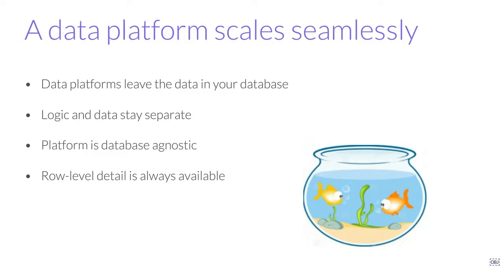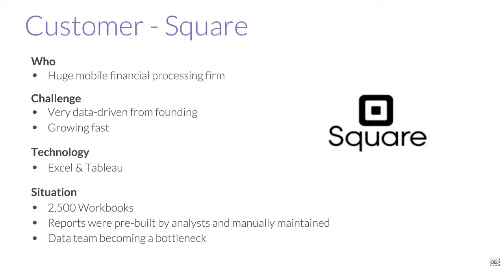A data platform — this third wave — gives you the scalability that you had with the first wave and the agility that you had with the second wave, simply by leveraging the incredible technology revolution that's happened. We're certainly not saying that the people who built Tableau, Click, MicroStrategy, or Business Objects made bad decisions — they were building incredible tools at the time. The problem is the times have changed and the constraints that decided how they architected their tools have gone away, opening up all these new possibilities. Our last customer example is Square — a huge mobile financial processing firm that makes those little card readers that plug into your phone.